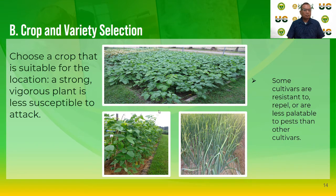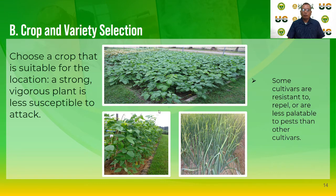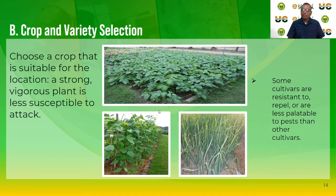Another technique is crop and variety selection. Choose a crop that is suitable for the location, as a strong vigorous plant is less susceptible to attack. Some cultivars are resistant to, repel, or are less palatable to pests than other cultivars. Plants also vary in their degree of attractiveness to insects, diseases, and disease vectors. Factors such as stem stoutness and nutrient content may affect the population of insect pests.